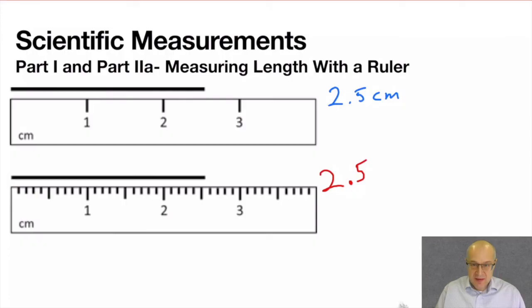But now we have to have the estimated digit. So here I'm going to say it's probably something like 2.55 centimeters. This is my estimated digit, and these two digits I got from the ruler. I just read it off the device.